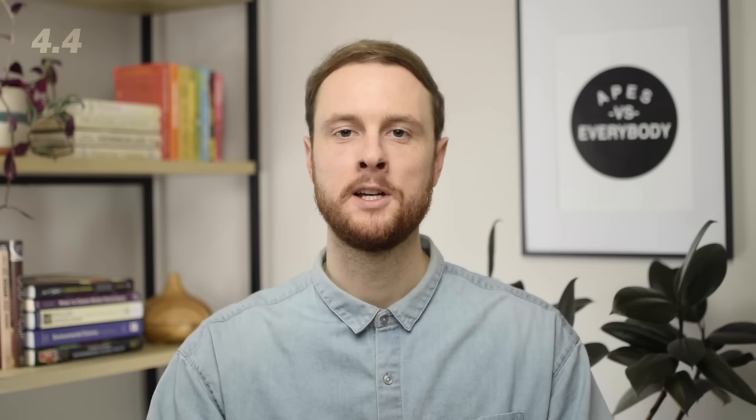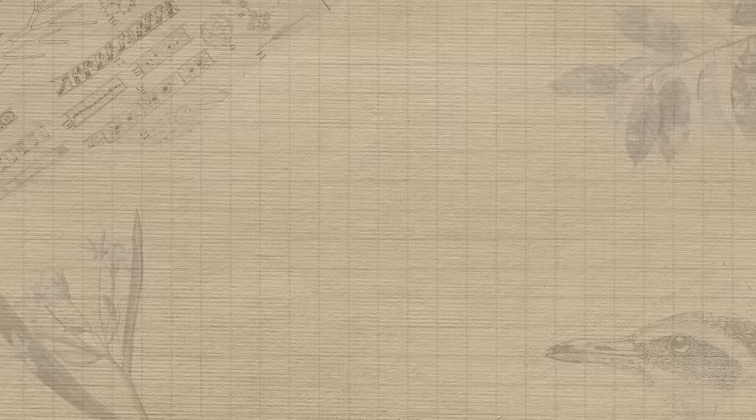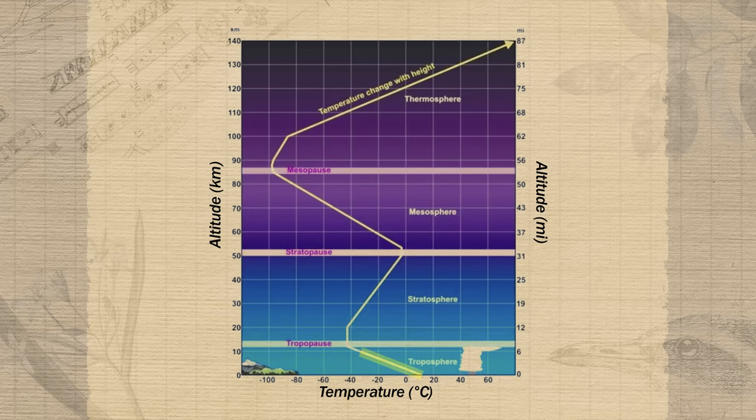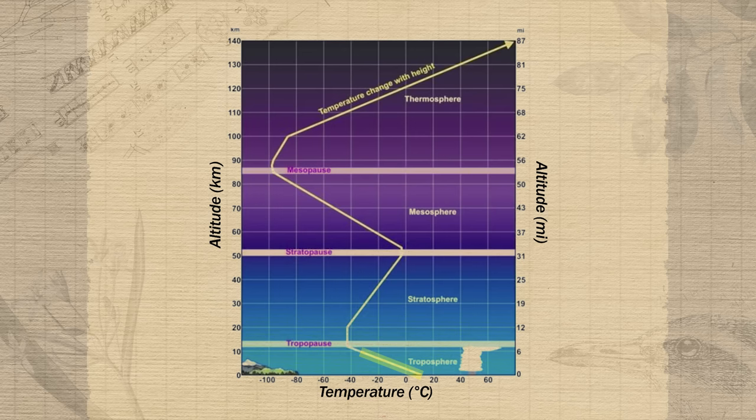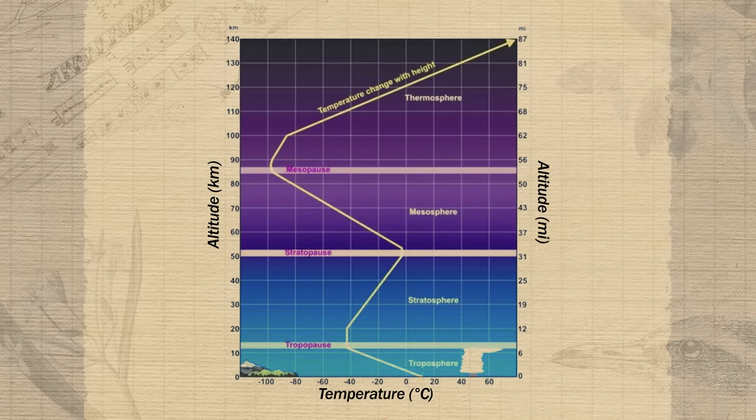Two key trends about the atmosphere layers: at each successive level, gas molecules are less densely packed, and each successive layer has an opposite temperature-altitude relationship from the layer below. You can remember this by starting with the troposphere — it gets colder as you go up in altitude, like climbing a mountain. Then just reverse that relationship at each successive layer above.